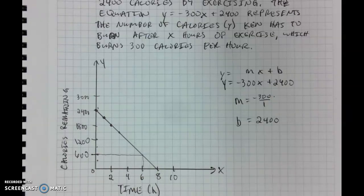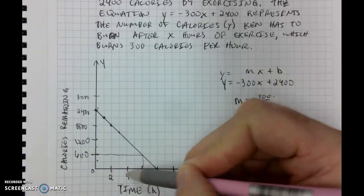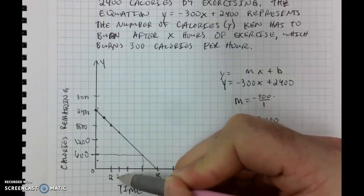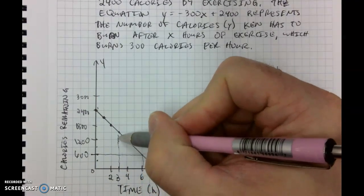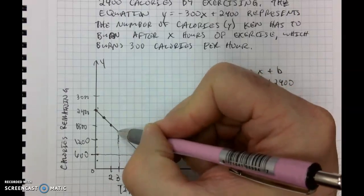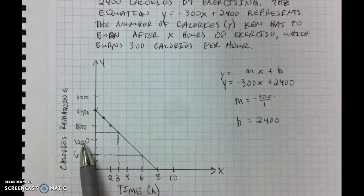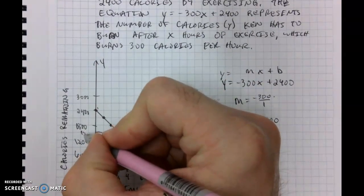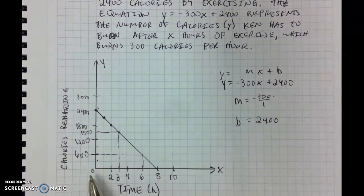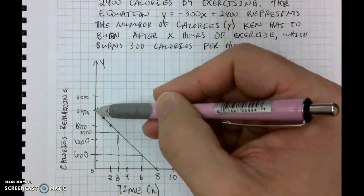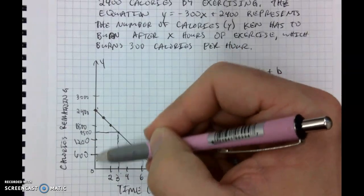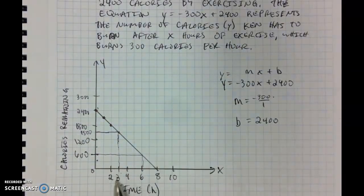Now let's say Ken knows that he's exercised for three hours and wants to figure out how many calories he has left to burn. In between the two and the four, we know there's going to be a three. We draw a rectangle up to our line and then over to our y-axis. Halfway between 1,200 and 1,800, we know that will be 1,500. So after three hours of exercise, Ken still has to burn 1,500 calories. By doing some math, we can see he's already burned 900 calories.